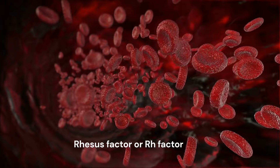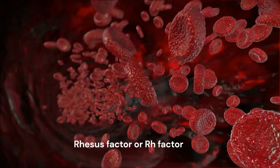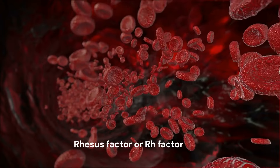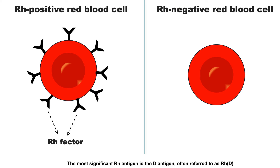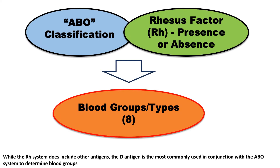The rhesus factor, also known as the RH factor, is a protein on the surface of red blood cells. It functions as an antigen and contributes to the positive or negative designation of the blood type in conjunction with the ABO system. The most significant RH antigen is the D antigen, often referred to as RHD. Additionally, the RH factor plays a crucial role in pregnancy. Combining the ABO and RH systems, usually RHD, results in eight blood groups or types.